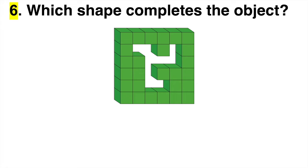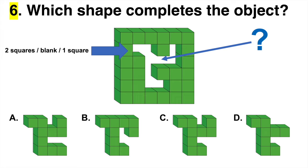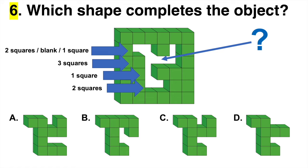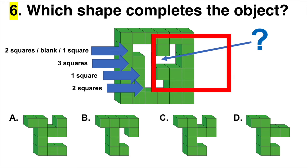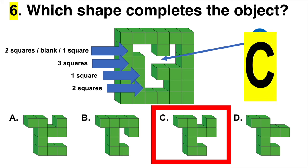Question six: which shape completes the object — is it A, B, C, or D? The fastest way to do this is to start at the top and decide which squares fit in each row. You need two squares, then blank, then one square in the top row; three squares in the next; one square, then two in the bottom row. The only answer from A, B, C, or D that fits is C. So the answer to question six is C.